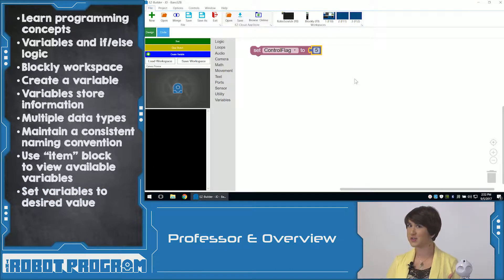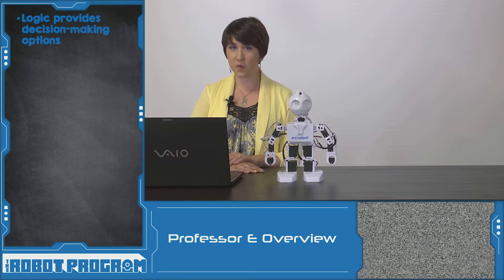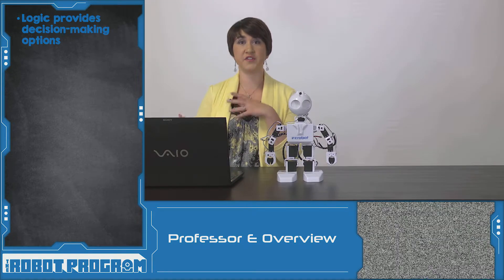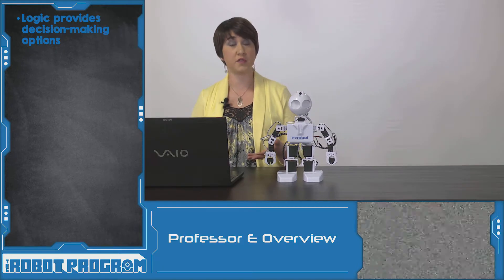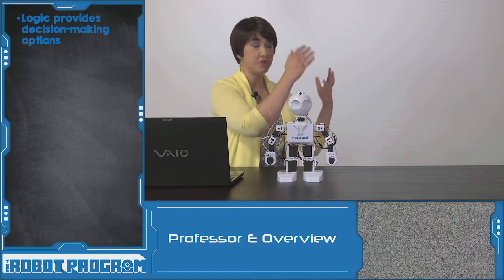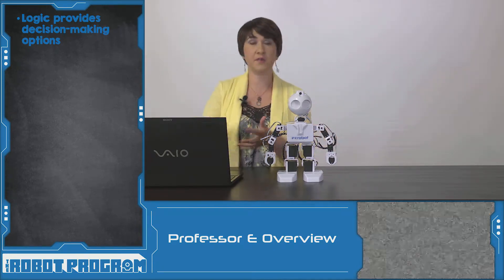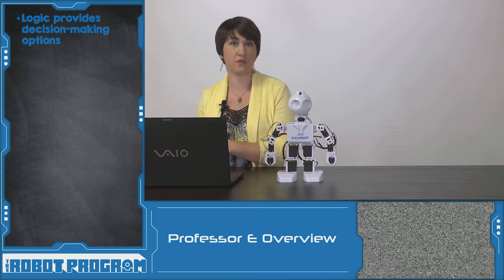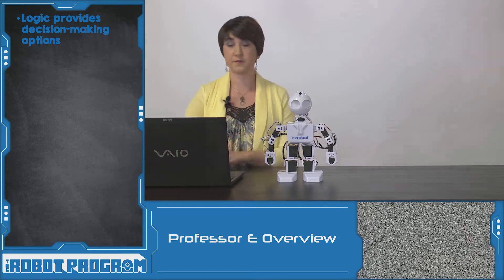So what can we actually do with our variables? Why don't we combine it with some if-else logic to actually control JD. Logic is a way to provide different decision-making branches for your code. If something happens, do this code. But if something else happens, do this code. It provides our robots with lots of different options.